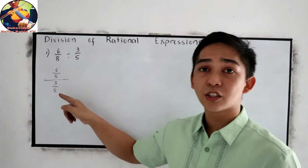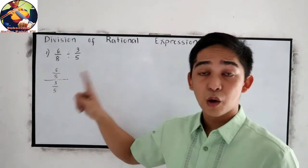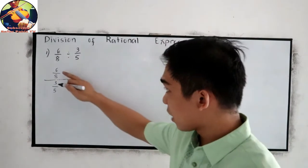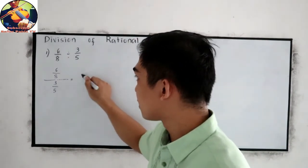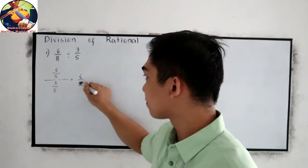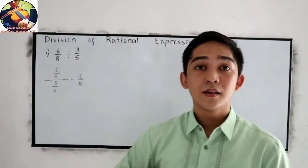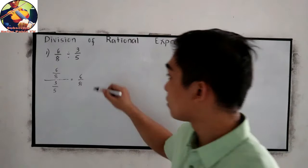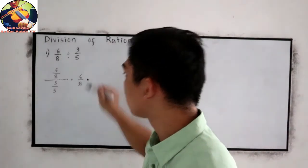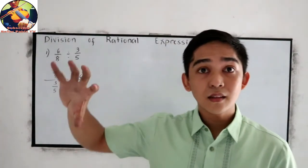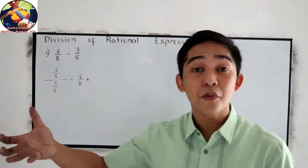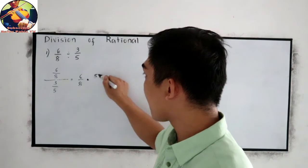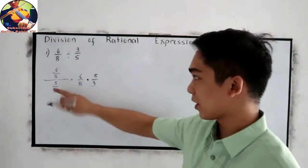To solve this kind of fraction, our first step is copy our numerator. In this case, our numerator is 6 over 8. Then proceed in multiplication. It will become times. Then get the reciprocal of our denominator. The reciprocal is 5 over 3.